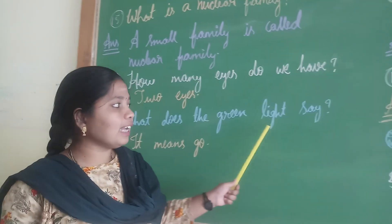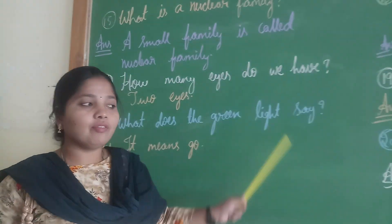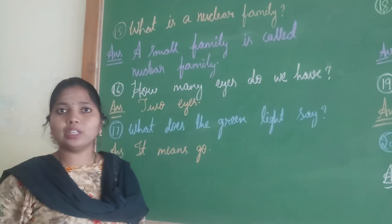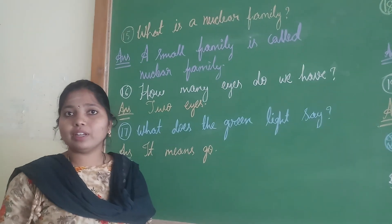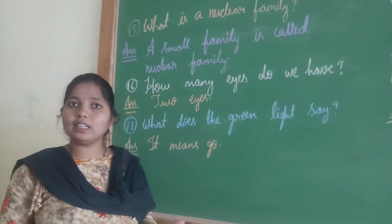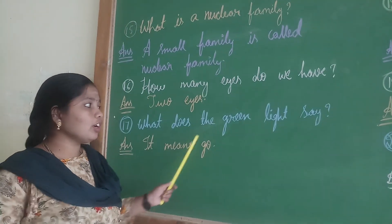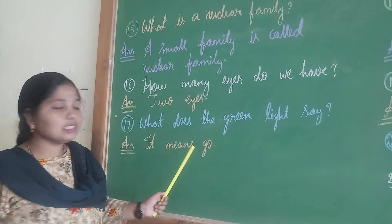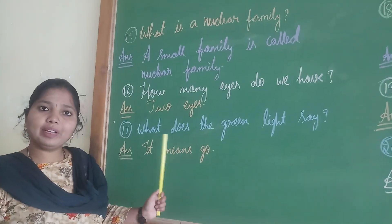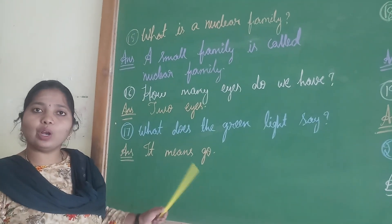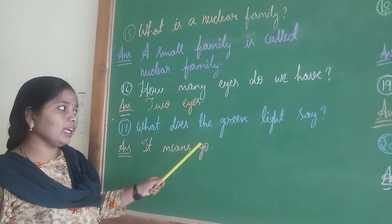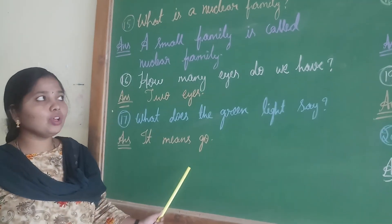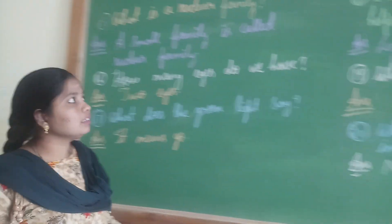Seventeenth question: What does the green light say? The traffic lights have three colors — red, yellow, and green. What does the green light say? The green light says go. Red means stop, yellow means be ready, green means we should start moving — it means go.